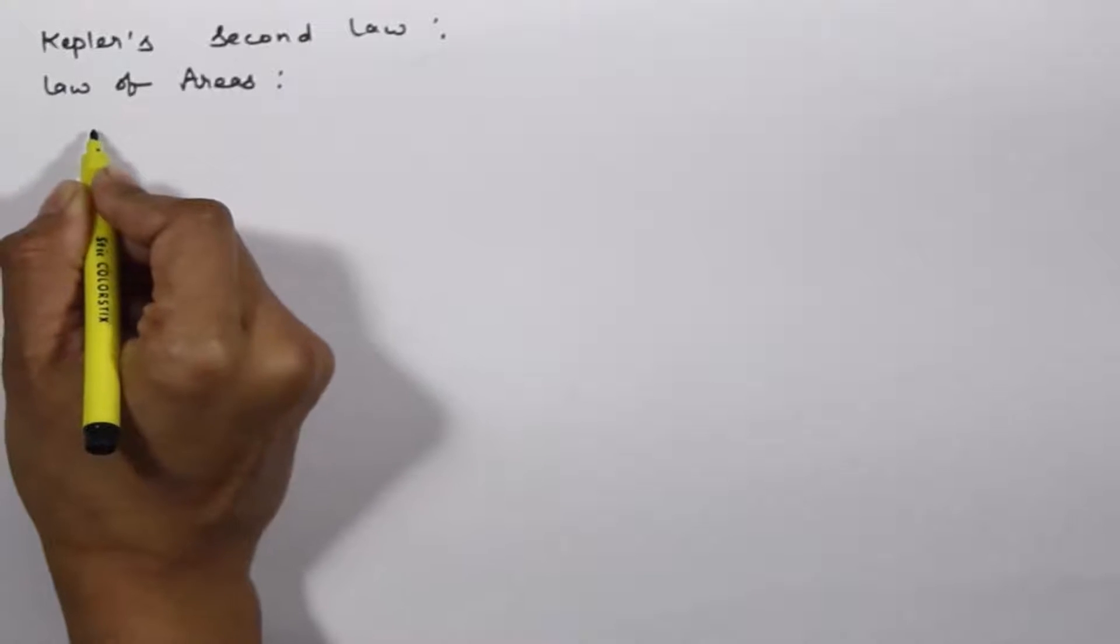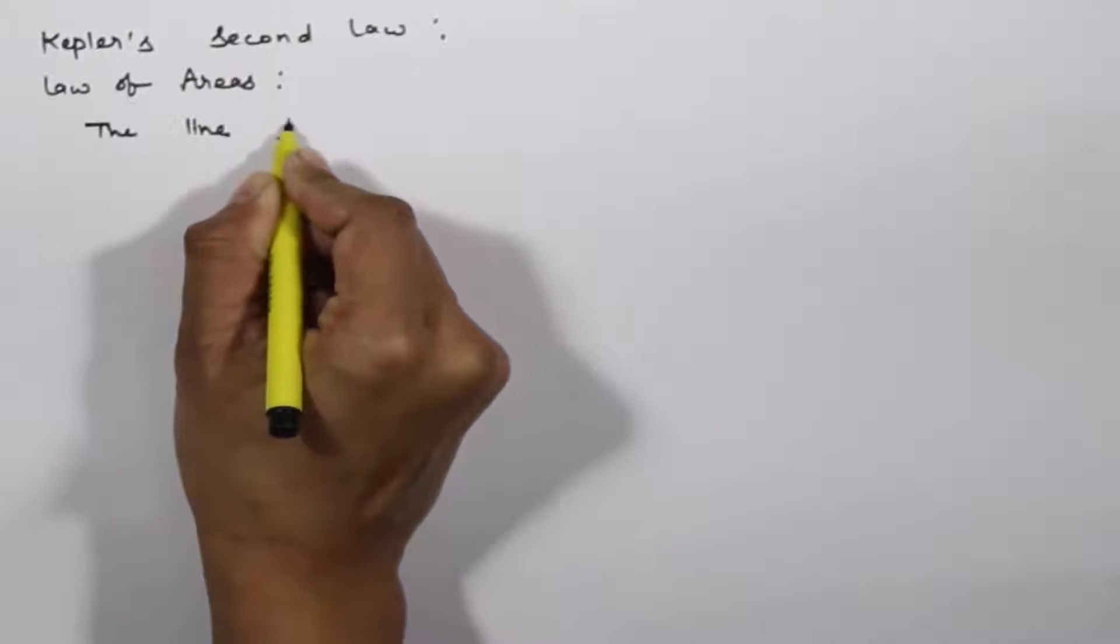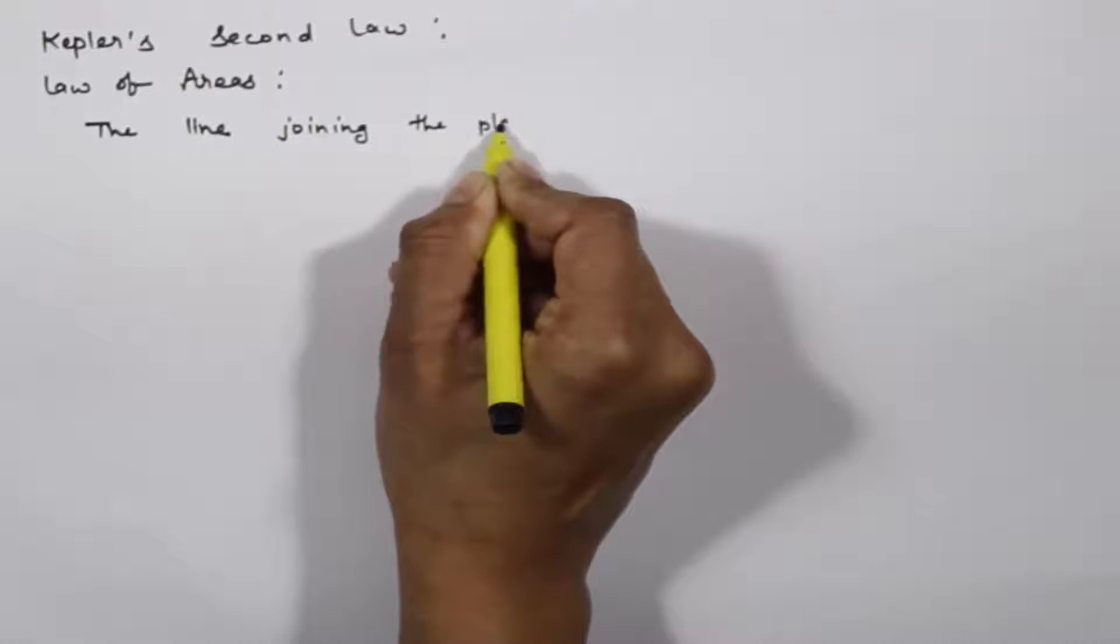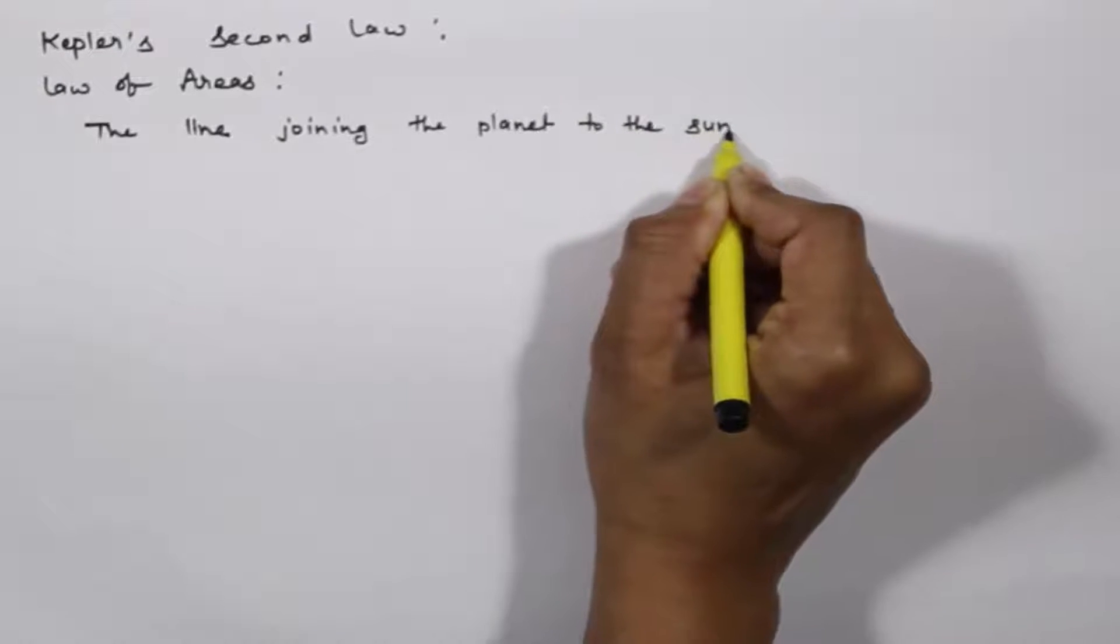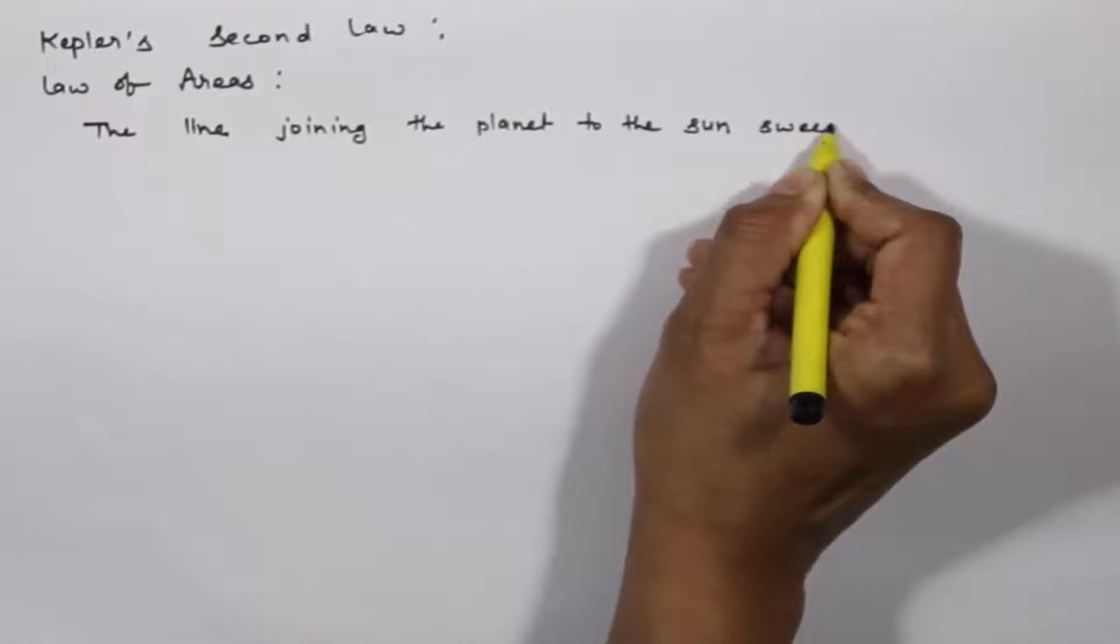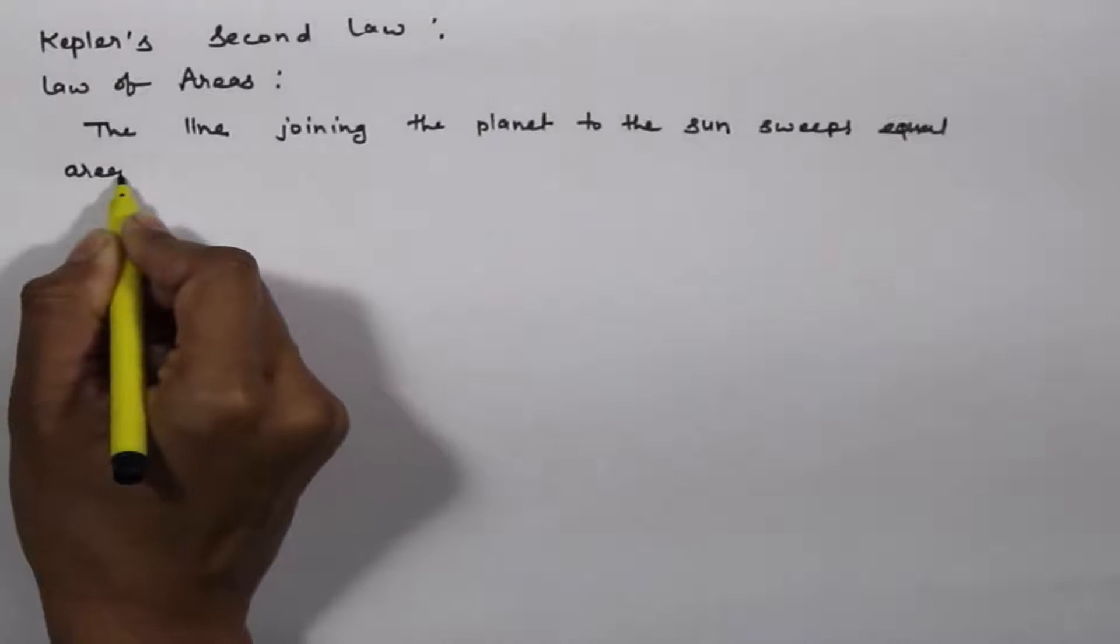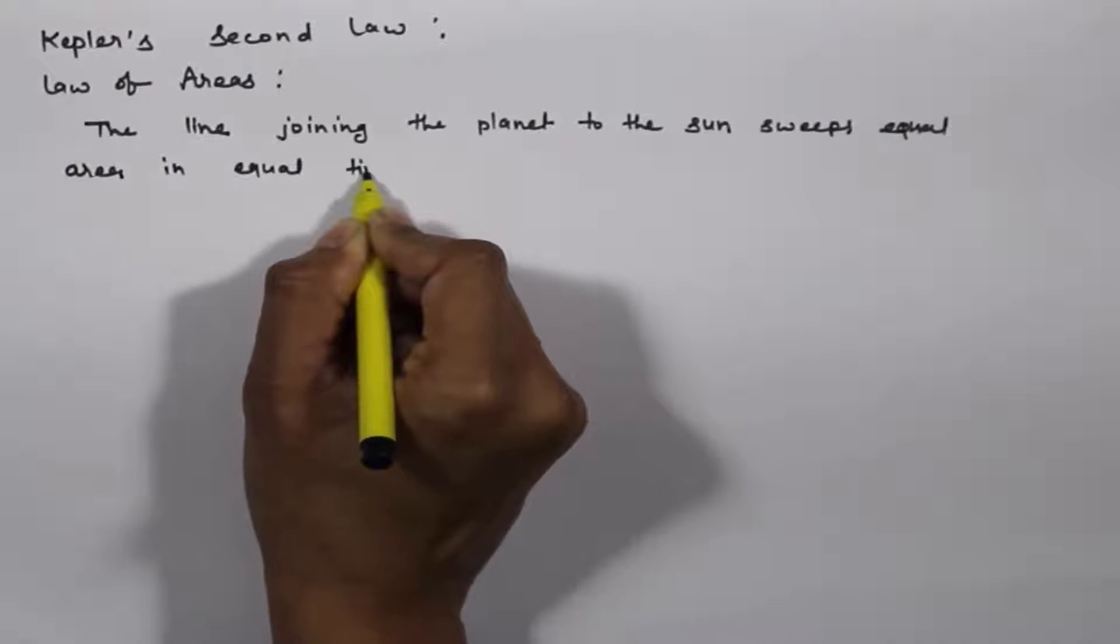In our last video, I told you that all planets move in elliptical orbits with the sun. And by the second law, the line joining the planet to the sun sweeps equal area in equal time intervals.